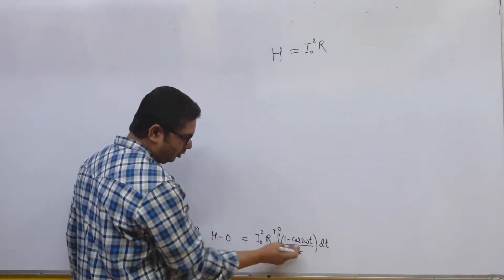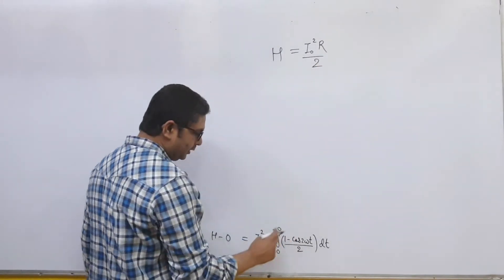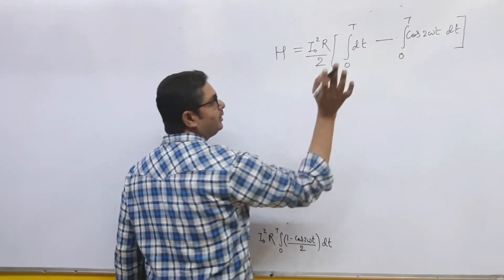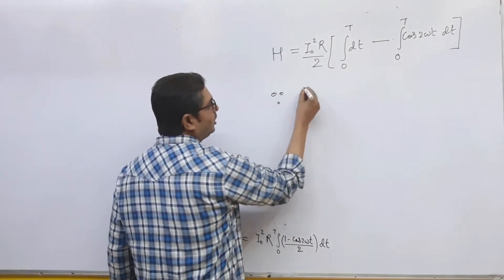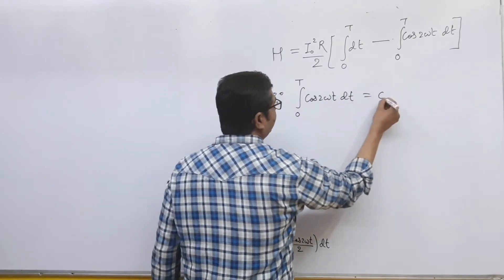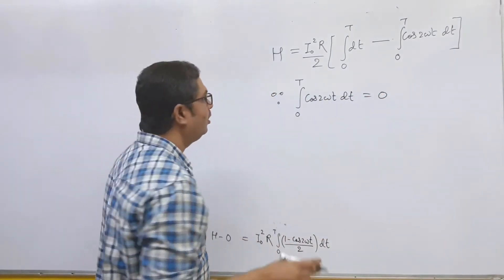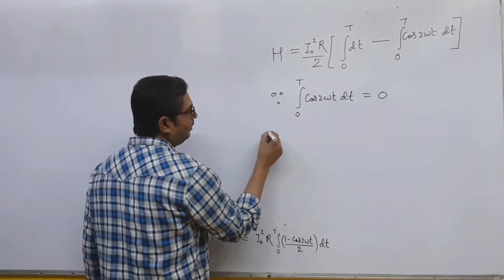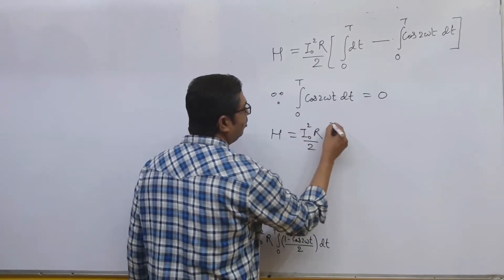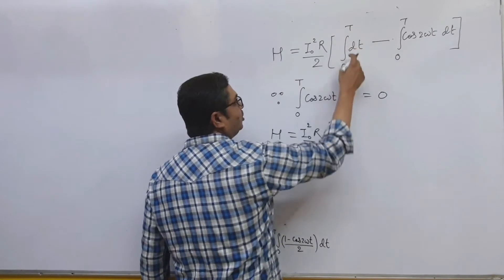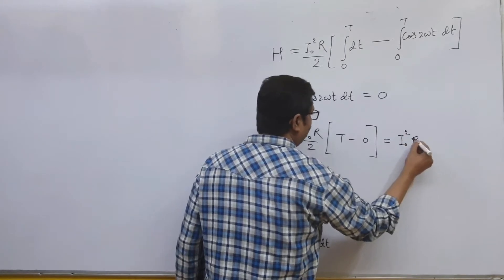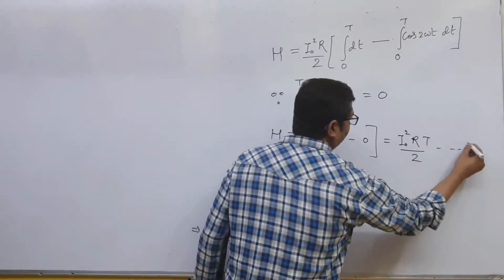The factor of 2 can be taken out of the integral. Since the integral from 0 to T of cos 2ωt dt equals zero, that term vanishes. So we have H equals i₀² R / 2, and integrating dt from 0 to T gives T. Therefore H equals i₀² R T / 2. Let this be equation number 1.